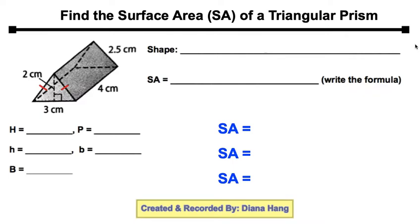Here's a diagram of a triangular prism. Let's recall the formula is 2 times capital B plus capital P times capital H. Let's look at our picture.